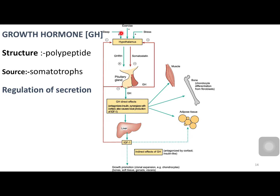All these stimuli — proper sleep, exercise, and stress — stimulate the neurosecretory cells of the hypothalamus, causing release of growth hormone releasing hormone, which acts on the anterior pituitary to release growth hormone. Growth hormone acts on the liver, which produces insulin-like growth factor IGF-1, which has negative feedback control on both the anterior pituitary and the hypothalamus. Growth hormone also has negative feedback suppression of growth hormone releasing hormone produced from the hypothalamus.